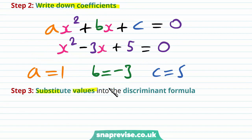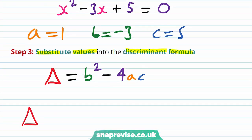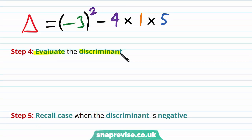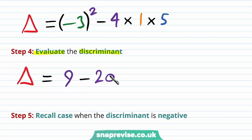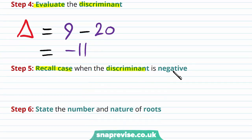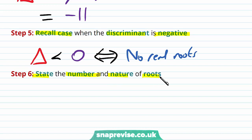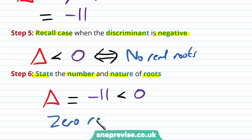Our third step is to substitute the values into the discriminant formula. Delta equals b squared minus 4ac, so delta equals minus 3 all squared minus 4 times 1 times 5. Evaluating: delta equals 9 minus 20, which gives us minus 11. Since the discriminant is strictly less than zero, this corresponds to no real roots. Therefore, our discriminant equals minus 11, which is strictly less than zero, and we have zero real roots.